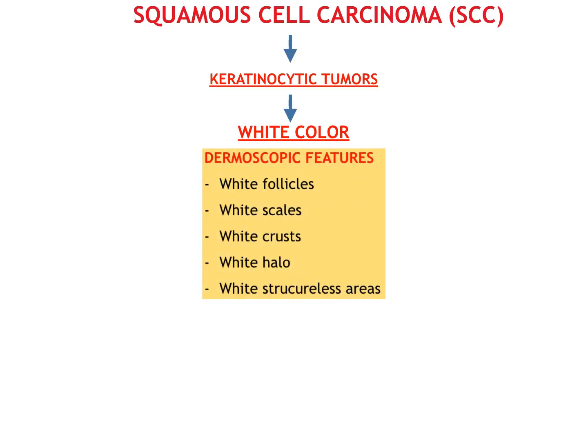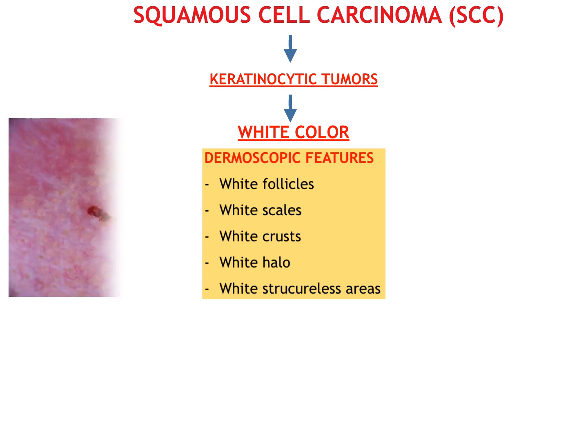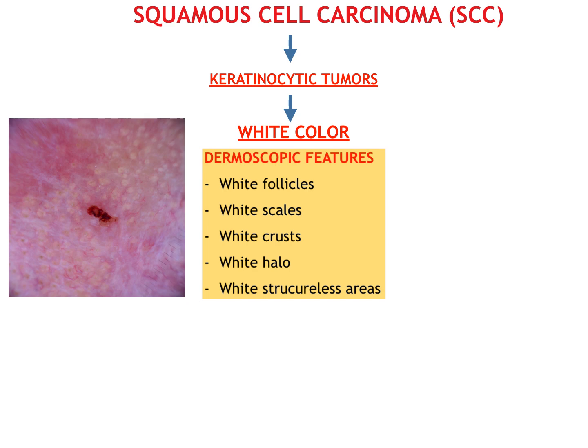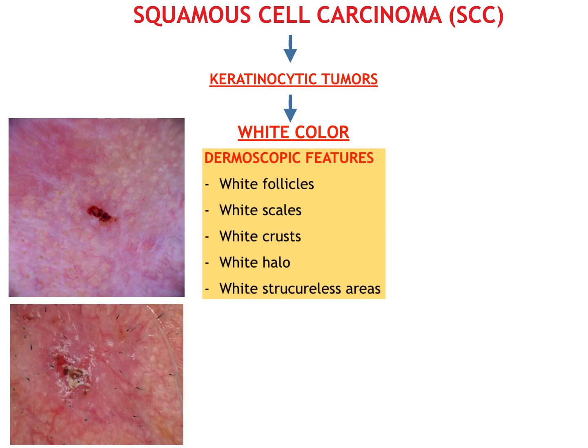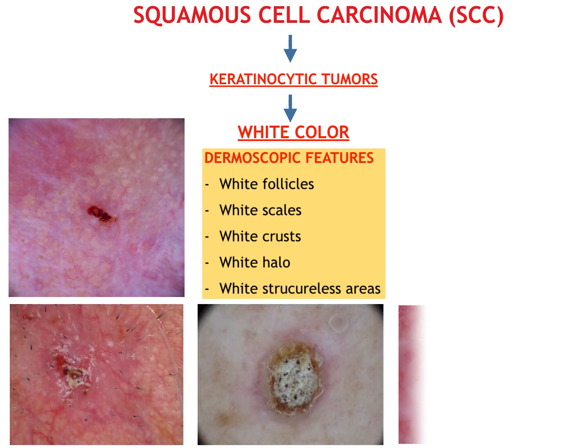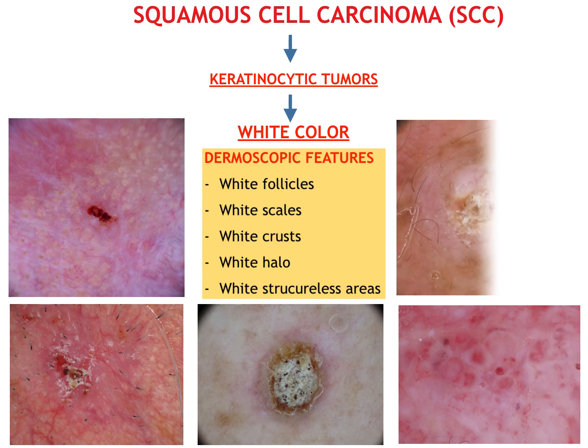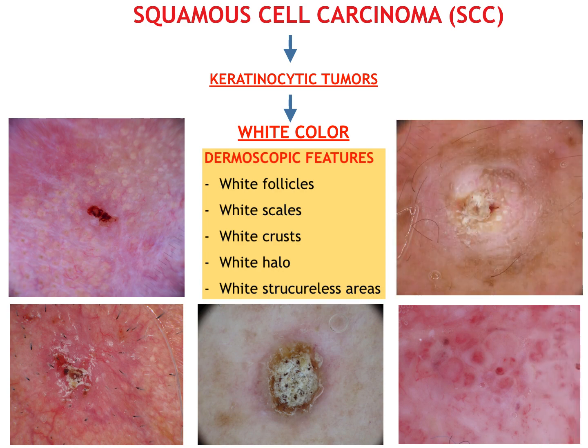Cutaneous squamous cell carcinoma is the second most common form of skin cancer. For its dermoscopic diagnosis, as well as for other keratinocytic tumors, white color has a crucial role and appears as white follicles, white scales, white crusts, white halo and white structureless areas.